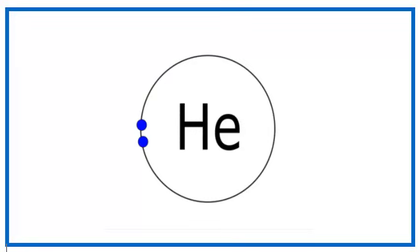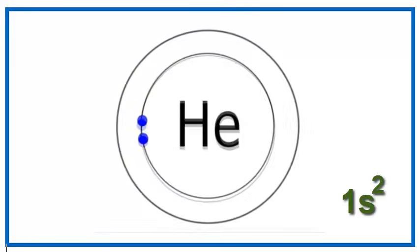Helium is another exception to the octet rule. It has two valence electrons in its outer shell, and that shell is full. If we were to add more electrons to helium for some reason, they would have to go in another shell.